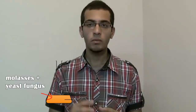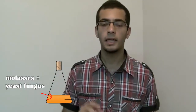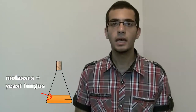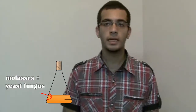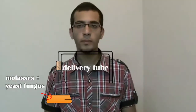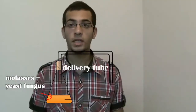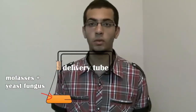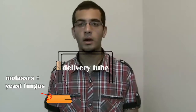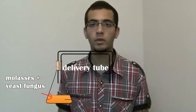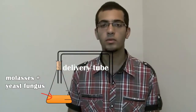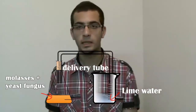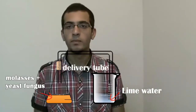In this flask, we will put a stopper at the head of the flask, and we'll insert a delivery tube. The first end of the delivery tube will be inserted in the opening of the flask, while the other end will be inserted into a beaker containing lime water.